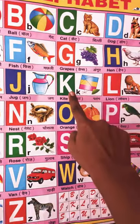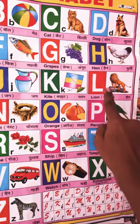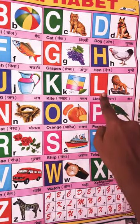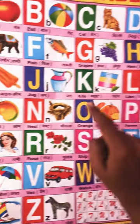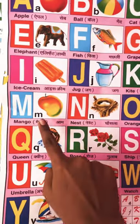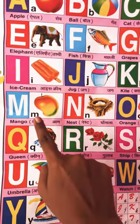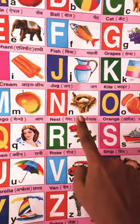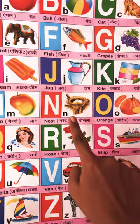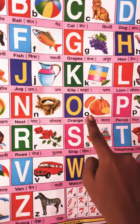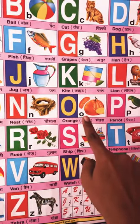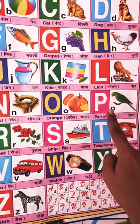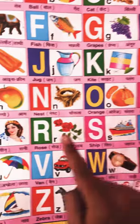K for kites, L for lion, M for mango, N for nest, O for orange.